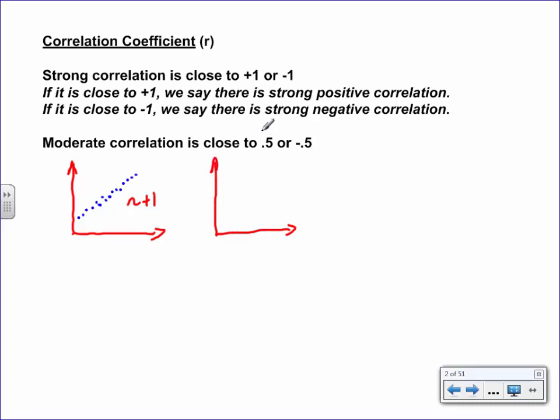If something has, again, its points pretty much falling very much in a close line going down, that would be something that would be very close to negative one in its correlation. Something like this, where, okay, we definitely have a positive upward correlation, but it's not as strong. It's a little more spread out. That we would say, okay, that's close to positive 0.5 or a half. Something that, again, the points tend to go down, but they're not as tightly packed together in a line. This would be approximately a negative 0.5.